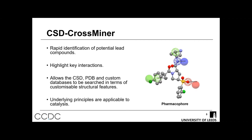CSD CrossMiner is used for rapid identification of potential compounds in a computational manner, by highlighting key interactions. In pharmaceutical development, you'd identify key interactions such as hydrogen bonds or planar rings and search databases like the CSD or the protein data bank to find similar structures with those same features. Because this uses identification of key geometries and chemistries, it is also applicable to catalysts — enabling us to identify ligands which provide the correct chemical environment, geometry, and electronic properties to enhance catalytic ability.